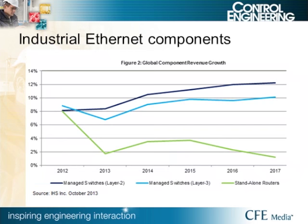IHS senior automation analyst John Morse explained that the way networks are constructed is changing — most changes are forecast at the controller-to-controller and enterprise levels, particularly where networks are being linked together. A figure shows how managed switches are still important in industrial networking, comparing forecast revenues for Layer 3 switches, Layer 2 switches, and standalone routers. A second figure shows year-on-year revenue percentage growth, illustrating a far higher growth rate forecast for Layer 3 managed switches compared to standalone routers. The cost factor is the most significant driver — a Layer 3 switch can eliminate the need for a separate router. IHS notes the graph shows a decline in growth, not an overall decline.